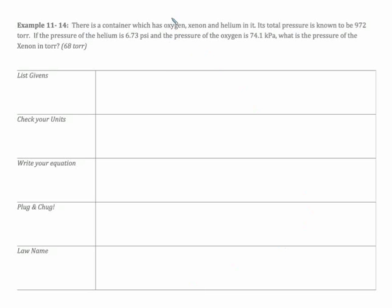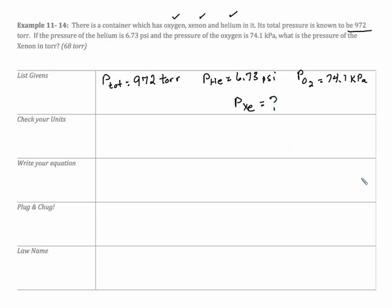Now, let's take a look at the first problem. We have a container with oxygen, xenon, and helium. I have a total pressure of 972. So let's list our givens. P total is equal to 972 torr. Then it tells me that the pressure of my helium is 6.73 psi, what you would see on your tires, pounds per square inch. And my partial pressure of oxygen is 74.1 kilopascals. And the question is, what is our pressure of my xenon?